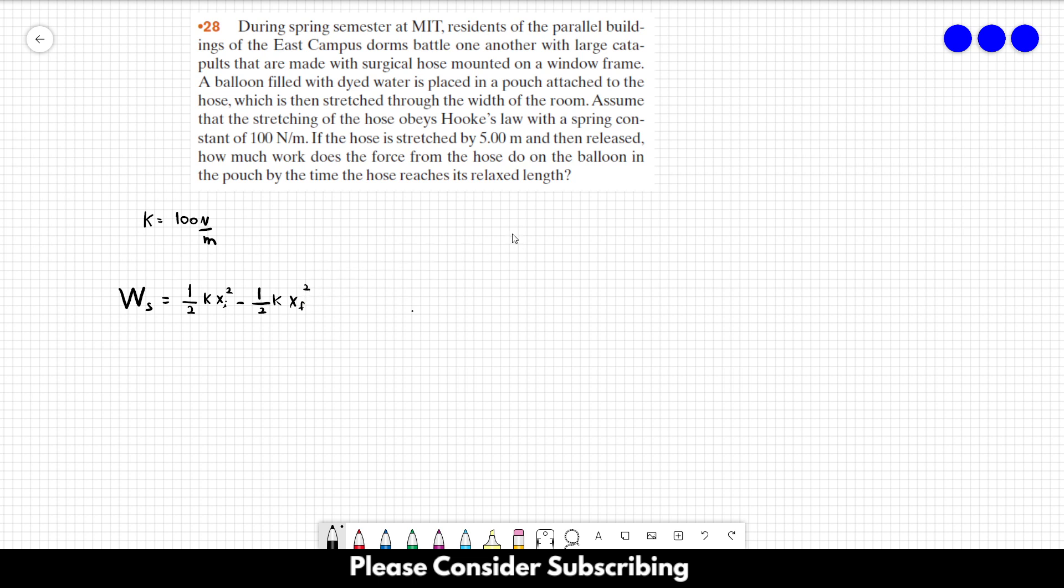In this case, the final position is zero because we want to know when the hose reaches its relaxed length, so it's when X is zero. So the equation simplifies even more.